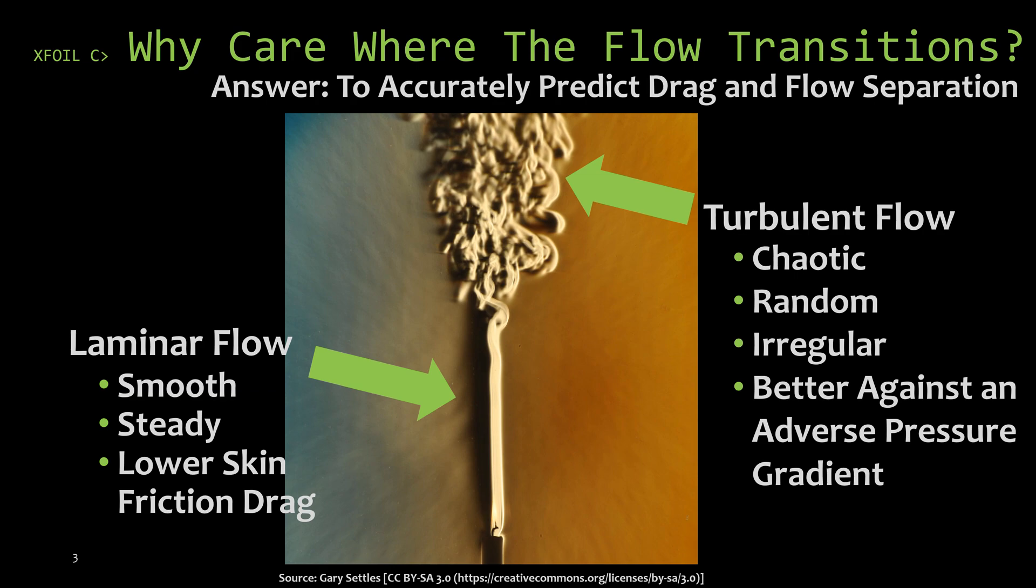Laminar flow and turbulent flow have different properties. As you can see from this picture of the smoke that comes up from a candle, there are two distinct areas, the laminar area and the turbulent flow area. The laminar flow is smooth, it's steady, and the turbulent flow is very chaotic, random, irregular.